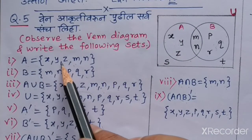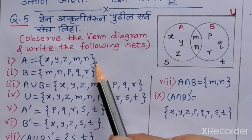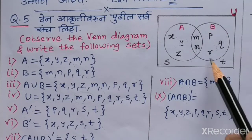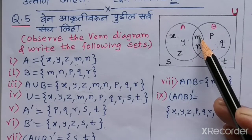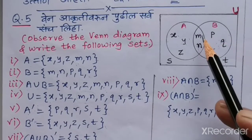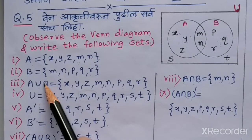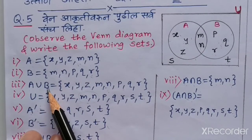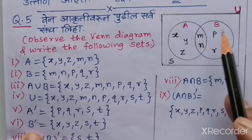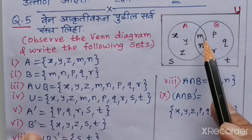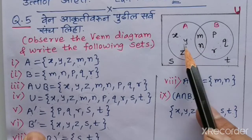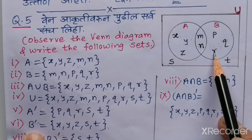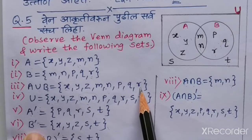So A = {X, Y, Z, M, N}. Similarly, set B contains all elements inside the right circle: M, N, P, Q, R. So B = {M, N, P, Q, R}. For A∪B, we write all elements of A and B, with common elements written once only: A∪B = {X, Y, Z, M, N, P, Q, R}.